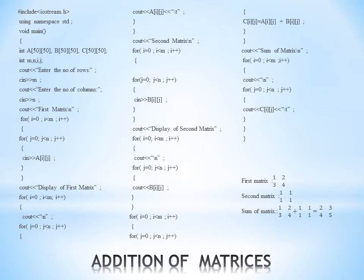We enter the number of rows and the number of columns. Then we start with the first matrix using a nested loop: I from 0 to less than M, J from 0 to less than N. We enter the elements inside the first matrix — array A is our first matrix. We then display it, because when we add two matrices we have to show the programmer which matrices were used.